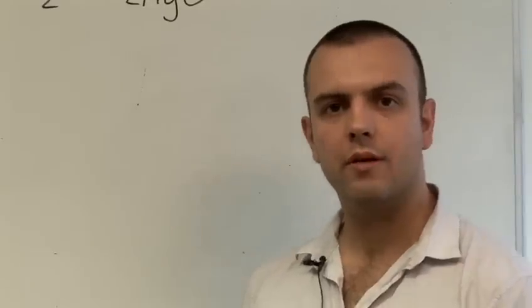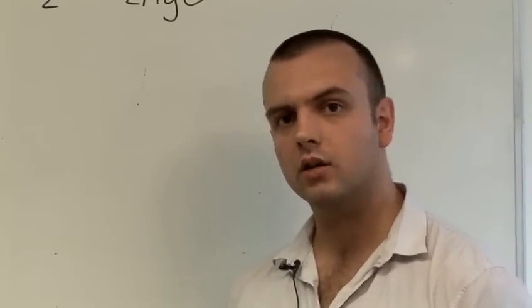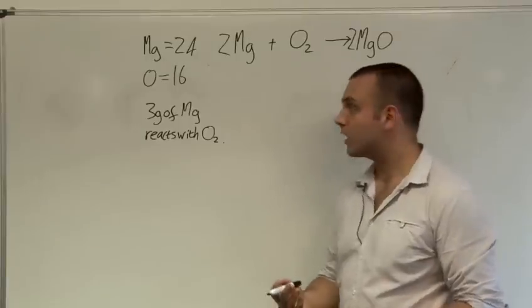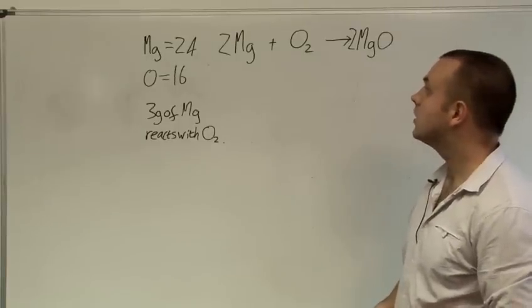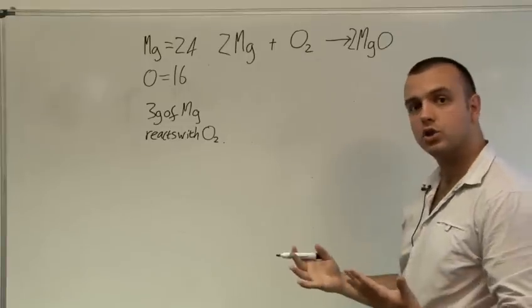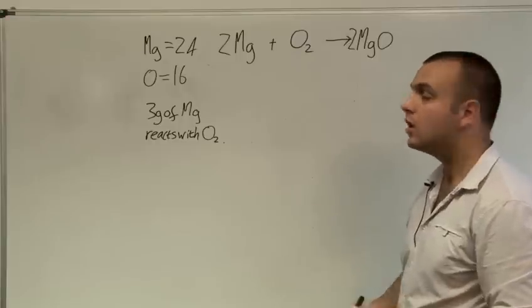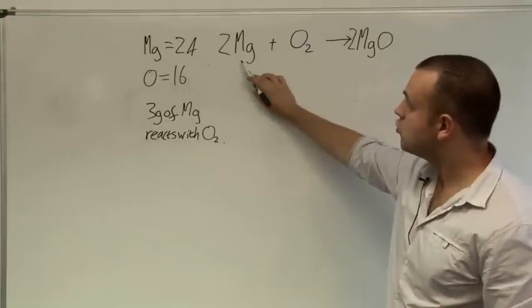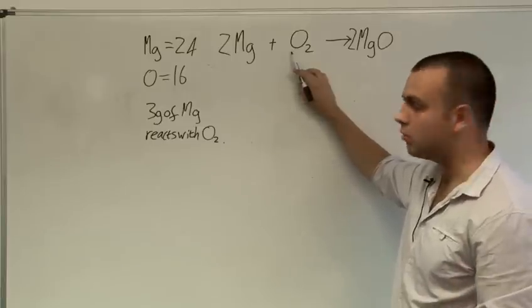Let's look at an example where the idea of moles allows us to predict what masses are involved in a chemical reaction. For example here we have the reaction of magnesium with oxygen to form magnesium oxide. Now it's already been balanced and the numbers tell you how many moles of that substance will react with how many moles of the other. So we can see that two moles of magnesium react with one mole of oxygen molecules to form two moles of magnesium oxide molecules.